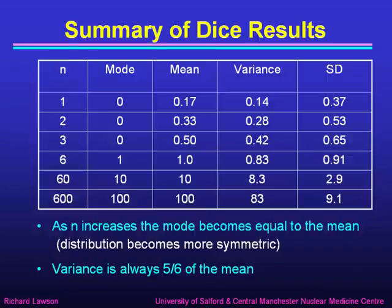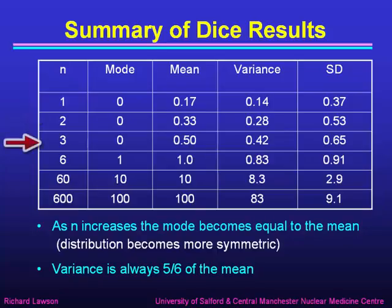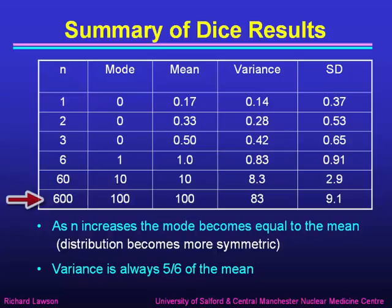Summarising the dice results: for n equals 1, mode was 0, mean was 0.17, variance was 0.14. For n equals 2, mode 0, mean 0.33, variance 0.28. For n equals 3, mode 0, mean 0.5, variance 0.42. For n equals 6, mode 1, mean 1, variance 0.83. For n equals 60, mode 10, mean 10, variance 8.3. And for n equals 600, mode 100, mean 100, variance 83. As n increases, the mode becomes equal to the mean because the distribution becomes more and more symmetric. The variance always turns out to be five sixths of the mean value.